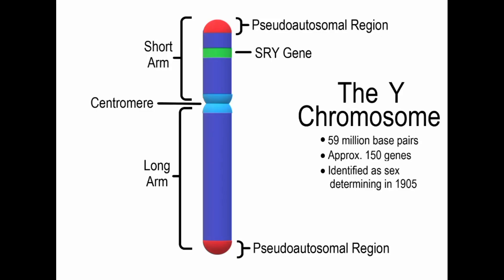A Y-sperm is a type of sperm cell that carries a Y-chromosome. When a Y-sperm fertilizes the egg, the resulting offspring will be male, since the resulting zygote will have one X-chromosome and one Y-chromosome.